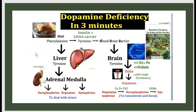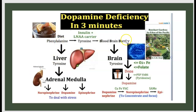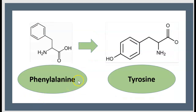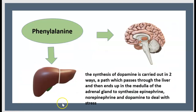Regarding dopamine synthesis, the cycle starts with food. Food comes with the amino acid phenylalanine. This phenylalanine coming from food can follow two pathways. The first pathway goes through the liver to the adrenal gland. The second pathway goes from food through the blood-brain barrier to the brain. The synthesis of dopamine is carried out in two ways. The first path passes through the liver and then ends up in the medulla of the adrenal gland to synthesize epinephrine and norepinephrine, and dopamine to deal with stress.